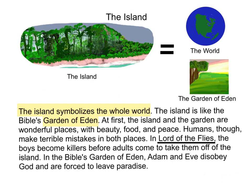The island symbolizes the whole world. The island is like the Bible's Garden of Eden — at first, both are wonderful places with beauty, food, and peace. However, humans make terrible mistakes in both places. In Lord of the Flies, the boys become killers before adults come to take them off the island. In the Bible's Garden of Eden, Adam and Eve disobey God and are forced to leave paradise.